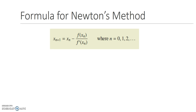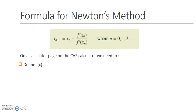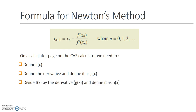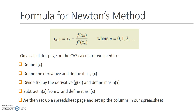With this formula, first of all on a calculator page, I'm going to define f of x, then define the derivative as g of x. I'm going to divide f of x by g of x and define that as h of x. Next, I will subtract h of x from x and define that as i of x. So altogether I need to define four functions: f of x, g of x, h of x, and i of x. Finally, I'll set up a spreadsheet page and configure the columns.